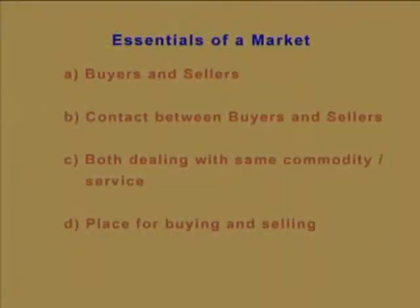The essentials of market are: number one, there should be buyers and sellers for the commodity or service. Second, there should be contact between buyers and sellers — the contact may be direct or indirect. Third, both buyers and sellers should deal with the same commodity or service. And the last essential is there should be a price for the commodity or service.